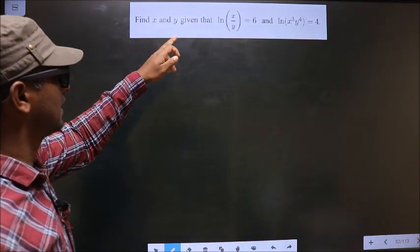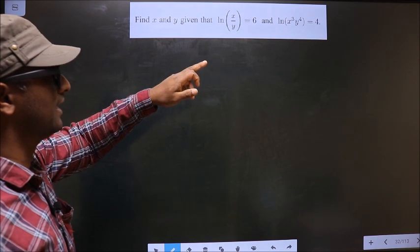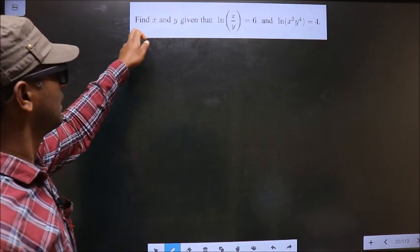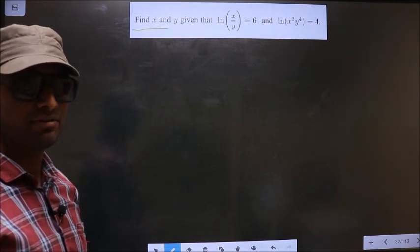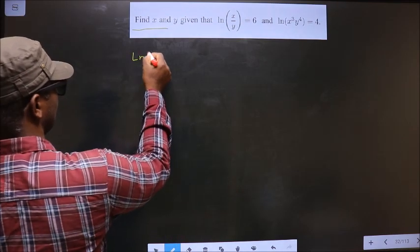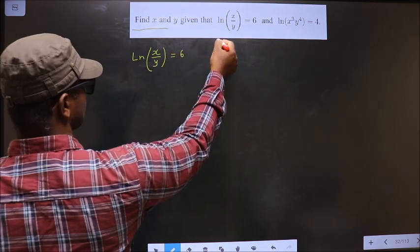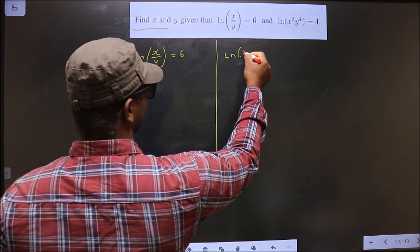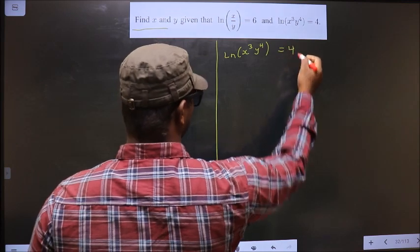Find x and y given that ln(x/y) = 6 and ln(x³y⁴) = 4. We need to find the values of x and y. The given equations are ln(x/y) = 6 and ln(x³y⁴) = 4.